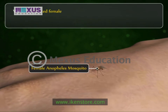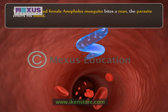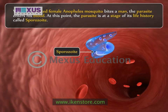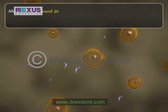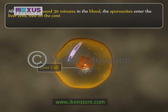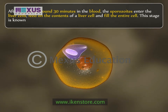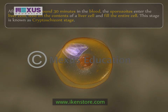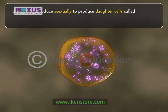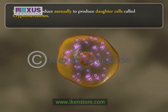When an infected female Anopheles mosquito bites a man, the parasite enters his blood. At this point, the parasite is at a stage of its life history called sporozoite. After spending around 30 minutes in the blood, the sporozoites enter the liver cells, feed on the contents of the liver cell and fill the entire cell. This stage is known as the crypto-schizont stage. Schizonts reproduce asexually to produce daughter cells called cryptomerozoites.